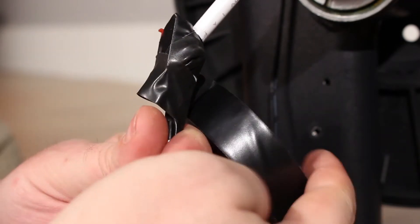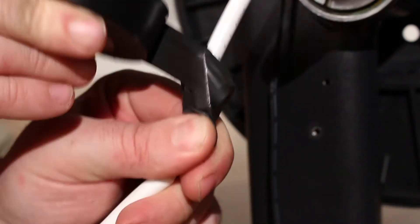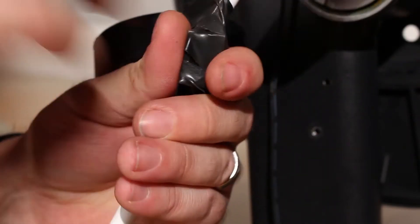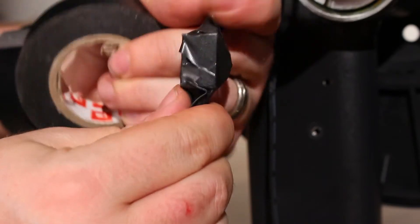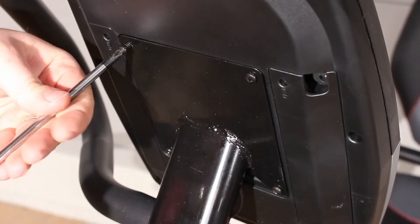You will be pulling the old wire harness up through the upright along with the new wire harness. You do not want them coming apart in this process, so tape them together securely. Once you have them taped together, push the taped section into the upright.